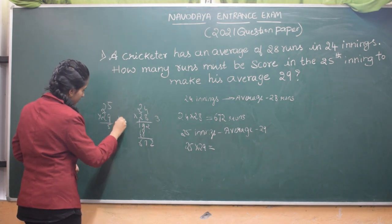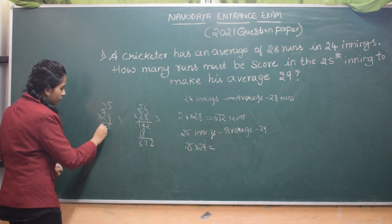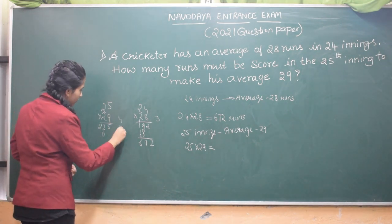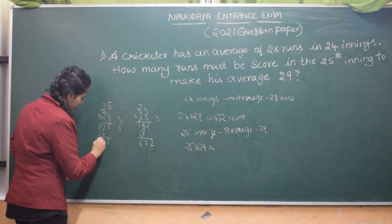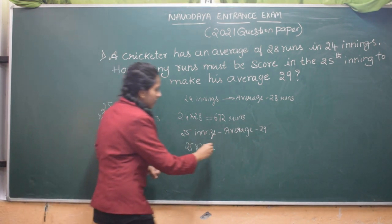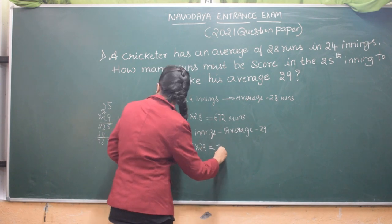9 times 5 is 45, 5, 4, carry. 9 times 2, 18. 9 times 2, 21, 22. 5 times 2 is 10. 2 times 2 is 4, 5. 5, 2, 7. So total number of runs in 25 innings is 725.